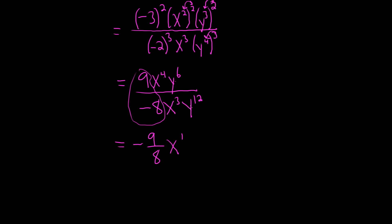And then here, y to the 6th over y to the 12th, you just do 6 minus 12 is negative 6.